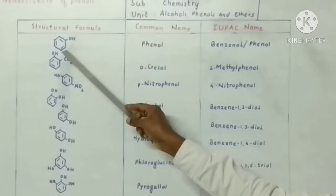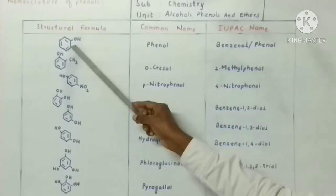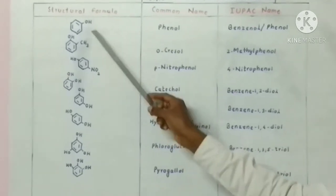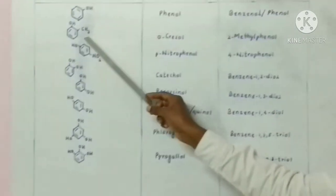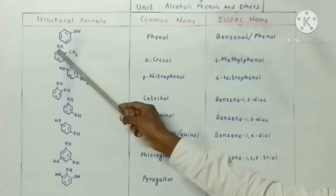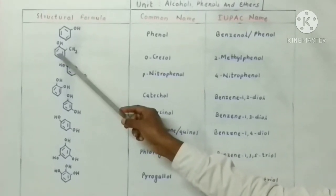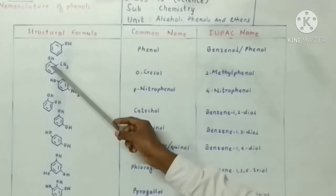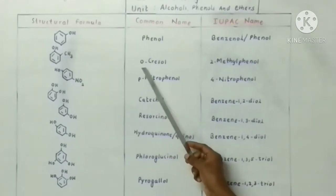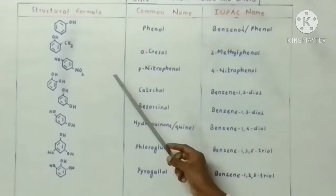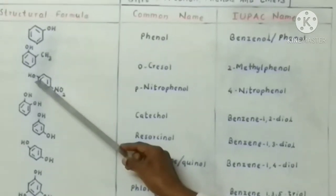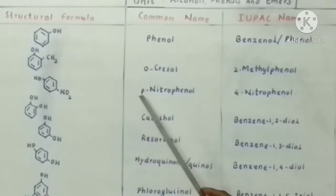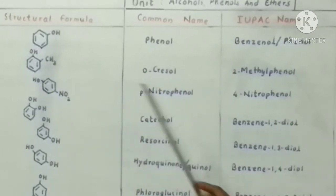Now some examples using common names. First is simple phenol: C6H5OH, where one hydrogen atom of benzene is replaced by OH, so its common name is phenol. Next, a methyl group is attached to the second carbon atom while OH is attached to the first carbon atom of the benzene ring — the structure is C6H4(OH)(CH3) — so its common name is ortho-cresol.